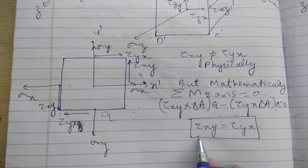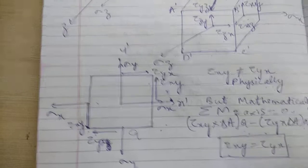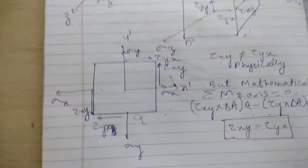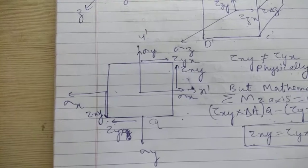So tau xy equals tau yx mathematically. Remember that. In this video we can now clearly imagine what's happening in the box when we apply shearing stress and tangential stress.